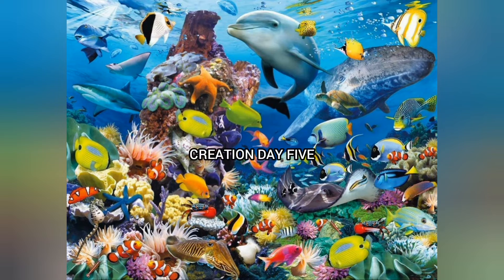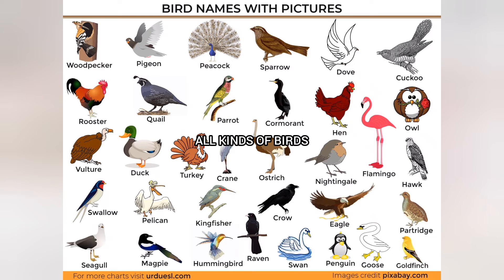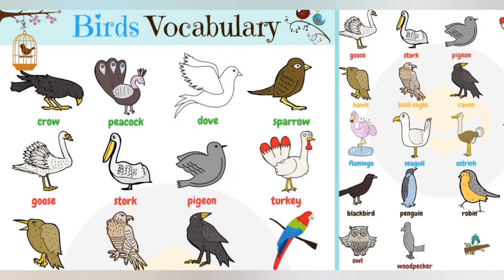Creation Day 5. Genesis 1 verse 20 to 23. God creates all life that lives in the water — any life of any kind that lives in the water is made at this point. God also makes all the birds. All these creatures are made with the ability to perpetuate their species by reproduction. The creatures made on day 5 are the first creatures blessed by God. God declares this work good.